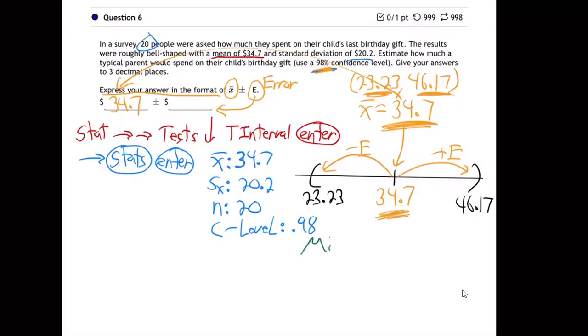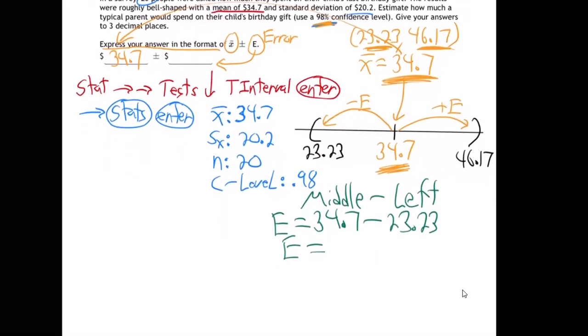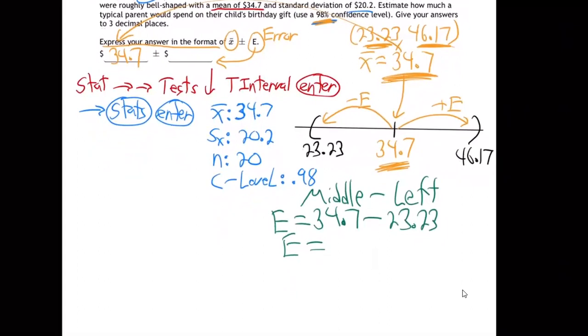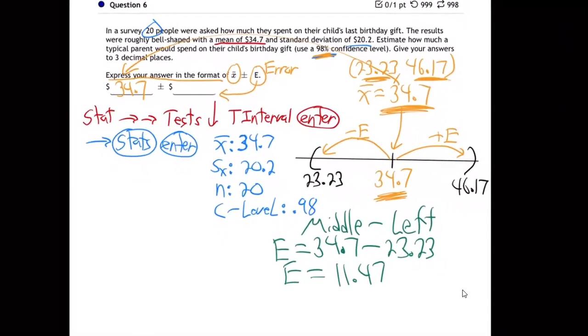So I would just take the middle, the mean minus the left, or you could do the right minus the middle, either one. So that'll be the middle 34.7 minus the 23.23. So that's the E amount. And so if you do that, I don't know what it is. I'm going to use my calculator here. 34.7 minus 23.23. I'm getting 11.47. So that's the error amount. That's the jump. Bring that up here. We're done with the question.